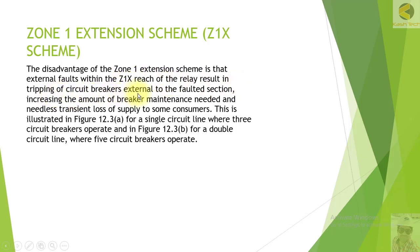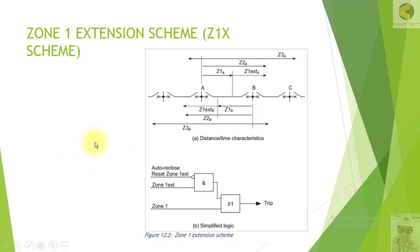The disadvantage of Zone 1 Extension scheme is that external faults within the Z1X reach result in tripping of circuit breakers external to the fault section, increasing the amount of breaker maintenance needed and causing needless transient loss of supply to some consumers. This is illustrated in figure 12.3a for a single circuit where three circuit breakers operate, and in figure 12.3b for a double circuit line where five circuit breakers operate.